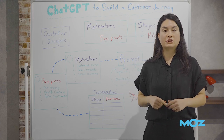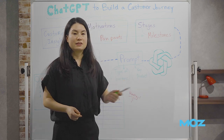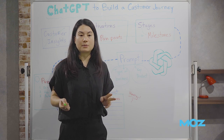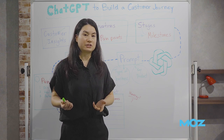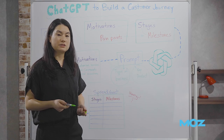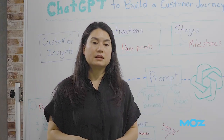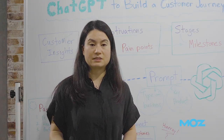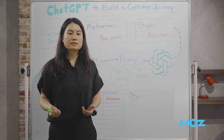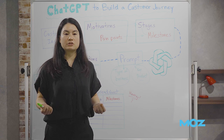Next, we'll use ChatGPT to get our journey stages. We need to include two key things in the prompt to generate a list of motivations: the type of business, and the key products and services. For example, let's say you own a home cleaning business. In your prompt, include home cleaning services, then ask ChatGPT: what are the key motivations when users search for home cleaning?